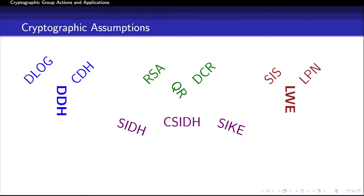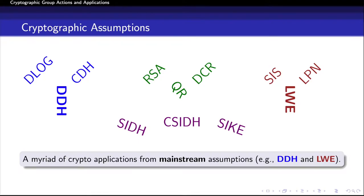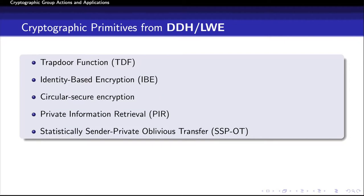However, these assumptions have not been extensively explored in terms of cryptographic applications. From mainstream cryptographic assumptions such as DDH and LWE, it's been known how to build a variety of cryptographic applications. For instance, we know how to construct trapdoor functions or identity-based encryption from these assumptions.